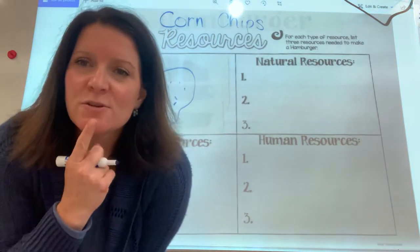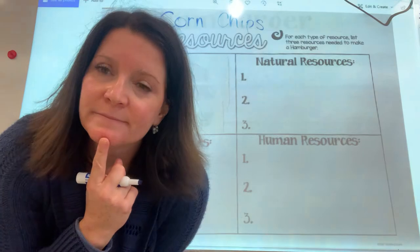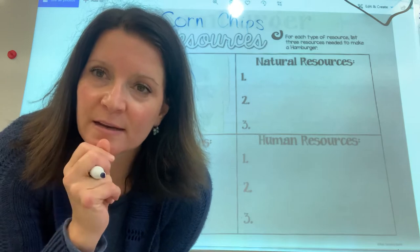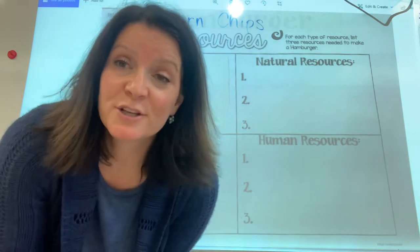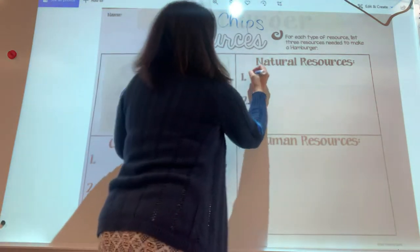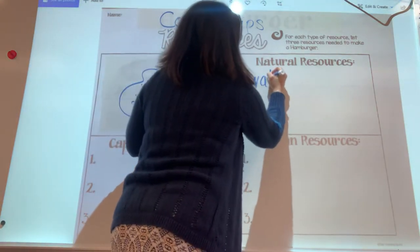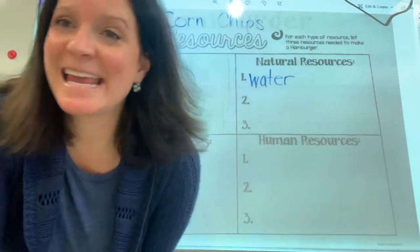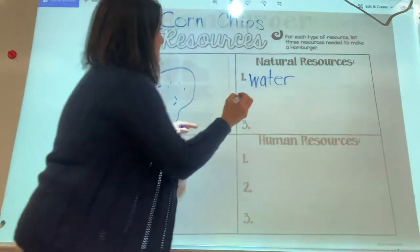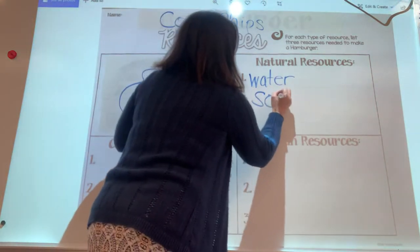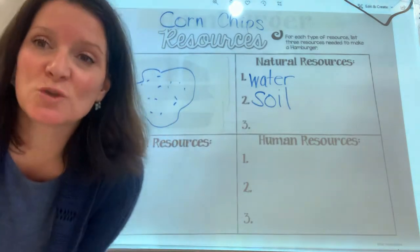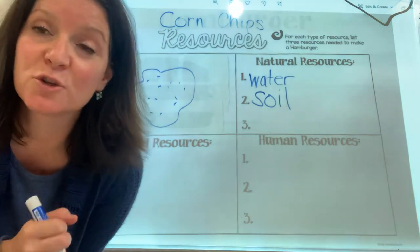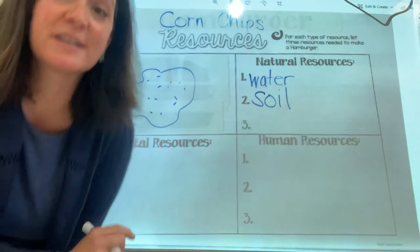So what natural resources might you need to grow corn? Think about it. It's a plant, right? So you definitely need to water plants — water is one natural resource you need. Where do you plant it? In the ground, in the dirt — the word we use is soil. So another natural resource is soil. And what do plants need to grow? We can harness it for solar energy, but the plants need it for their own energy: the sun.